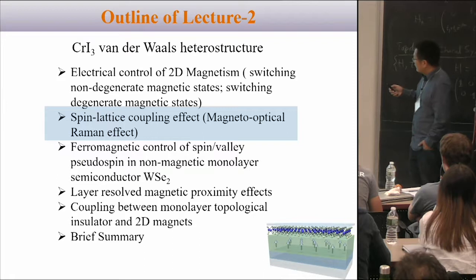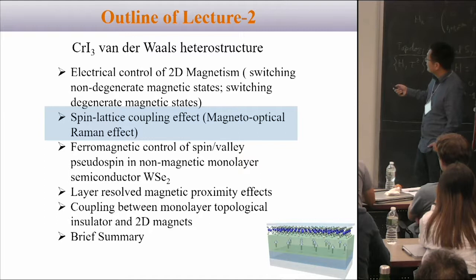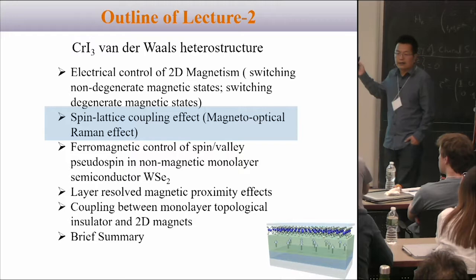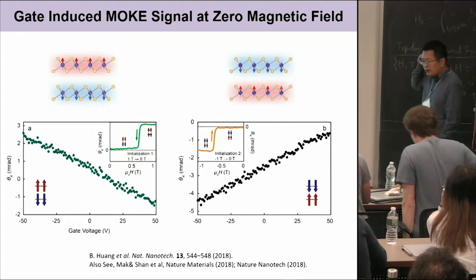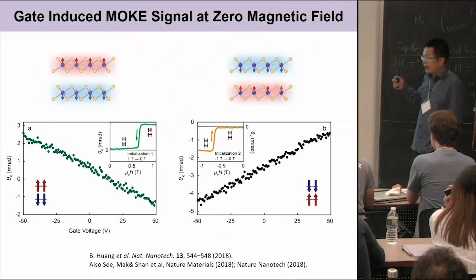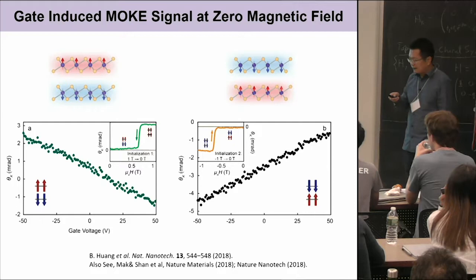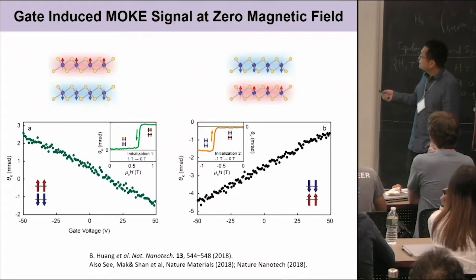We're going to return to electric field control shortly, but first I want to spend a little more time on this spin-lattice coupling. The key mechanism for using electric field to control magnetism: once you have an electric field, you break the inversion symmetry. Plus the time reversal symmetry breaking, then you will have this electric field-induced Kerr rotation effect. The details are explained in a 2016 PRL paper.